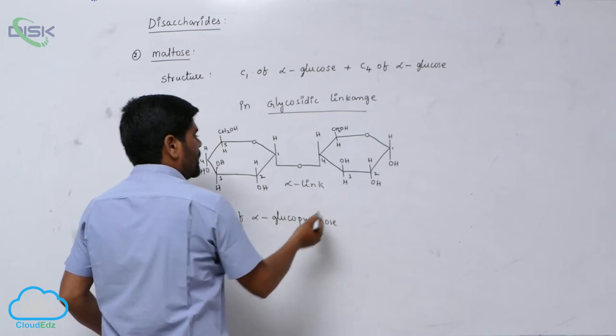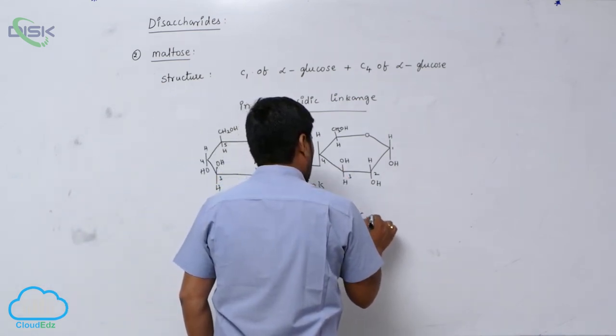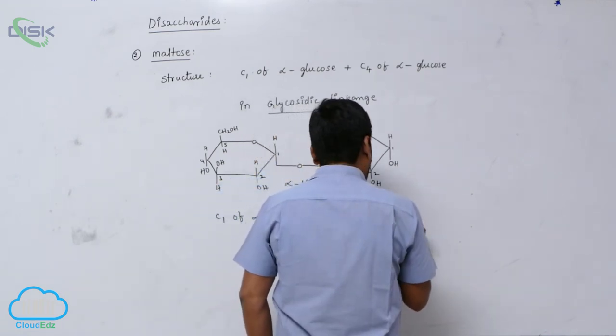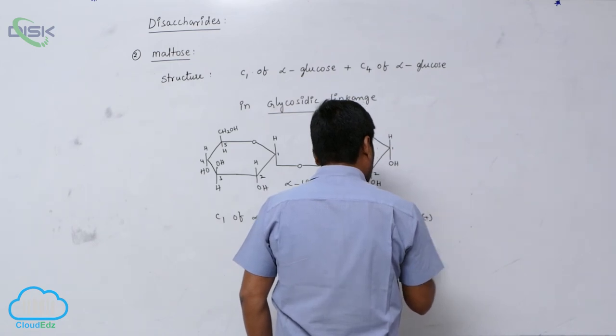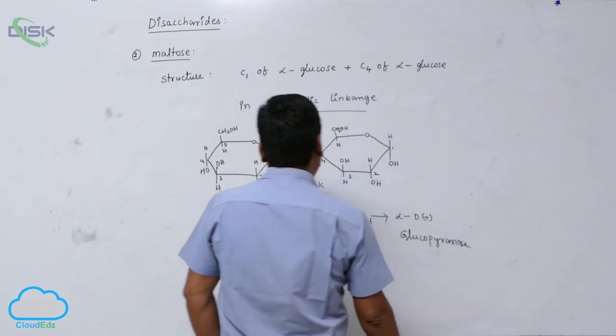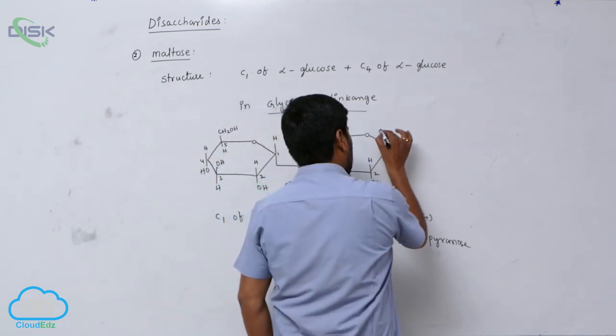This is alpha D-plus glucopyranose. It has free hemiacetal.